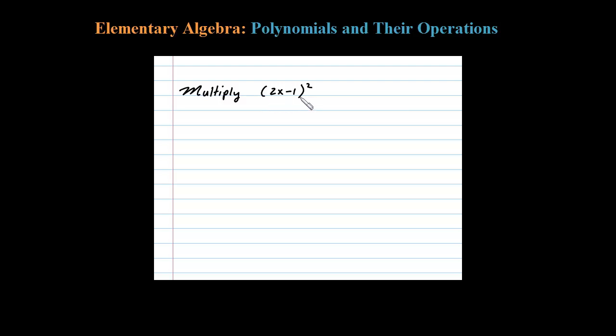Here we're asked to square this binomial. So when you square this, what we're really asked to do is multiply 2x minus 1 times itself. And to do that, what we have to do is distribute the 2x and distribute the negative 1.